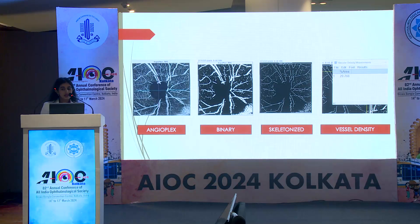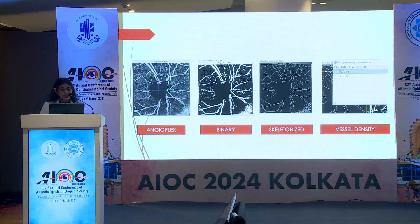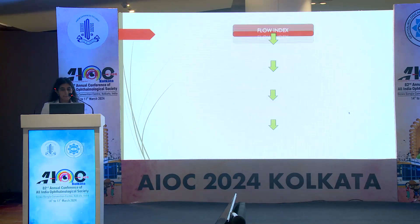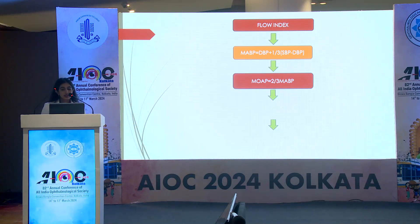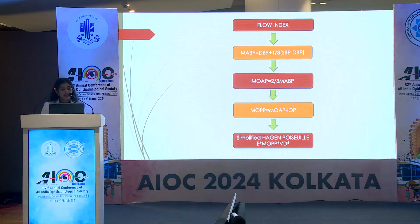These are the Angioplex images obtained from OCT angiography. We further processed our images into binary format using appropriate plugins available in the software, skeletonized the images, and calculated vessel density. The flow index was calculated using the blood pressure of the patients to derive the mean ophthalmic artery pressure and mean ocular perfusion pressure, and using a simplified Hagen-Poiseuille formula, we calculated the flow index.